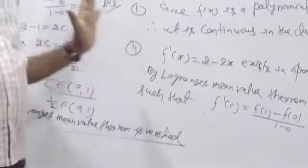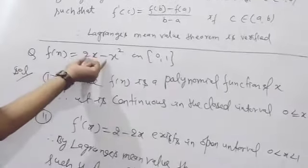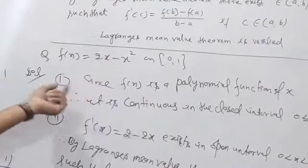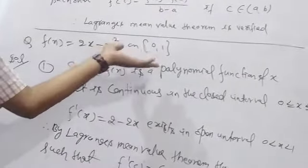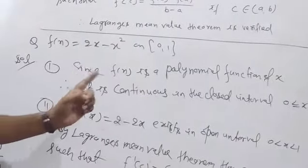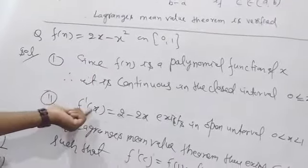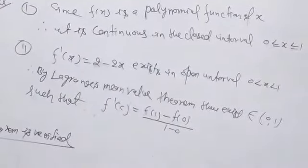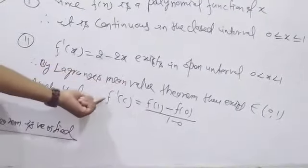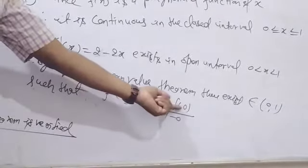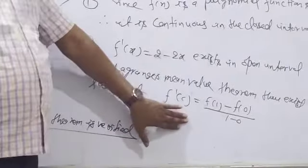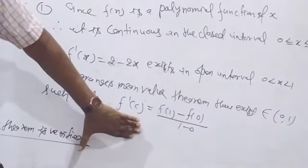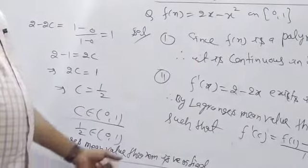Hence, understood? Very simple. Whatever the function — exponential, polynomial, trigonometric, algebraic — we write: the given function is continuous. Why? Because it is algebraic, polynomial, trigonometric, or exponential. Simply write the function type. Then in the closed interval a ≤ x ≤ b, second point: find f'(x), the derivative exists in the open interval a < x < b. After that, by the Lagrange Mean Value Theorem, f'(c) = [f(b) − f(a)] / (b − a). With this, find the value of c. The value of c belongs to (a, b), meaning c lies between a and b. Then we say the Lagrange Mean Value Theorem is verified.